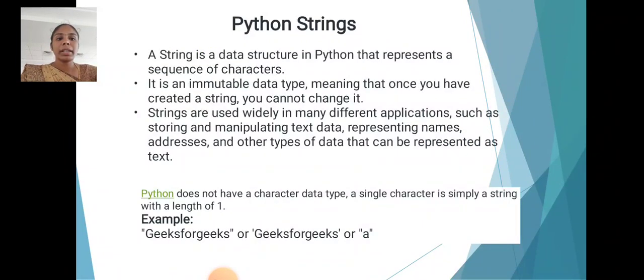Python string. A string is a data structure in Python that represents a sequence of characters. It is an immutable data type, meaning that once you have created a string, you cannot change it. Strings are used widely in many different applications, such as storing and manipulating data, text representing names, addresses, and other types of data that can be represented as text.